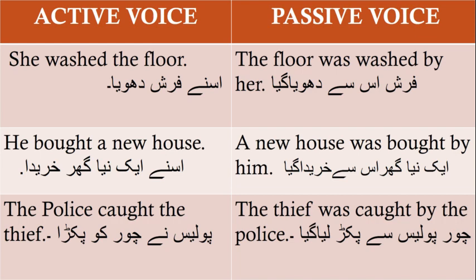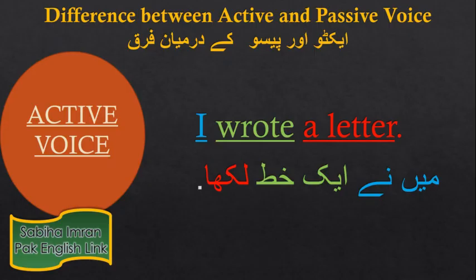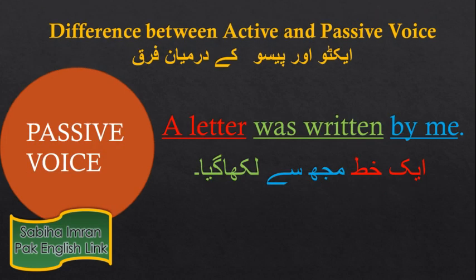यहाँ आपने note किया होगा कि दरहसल active और passive दोनों तरह के जुम्लों में एक ही बात दो मुख्तलिफ तरीकों से की जा रही है। इनके बीच फर्क को और समझने के लिए एक simple example लेते हैं। Active sentence है — I wrote a letter — मैंने एक खत लिखा। इसकी passive voice है — A letter was written by me — एक खत मुझसे लिखा गया।